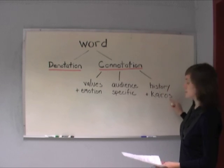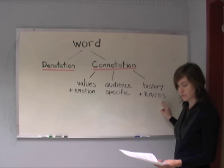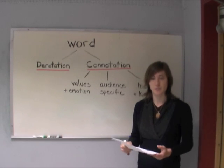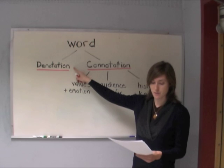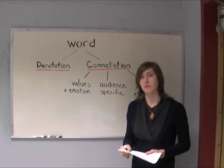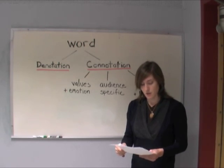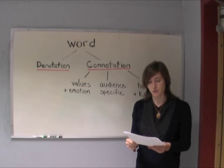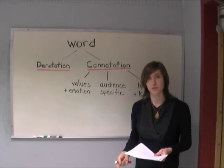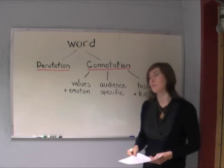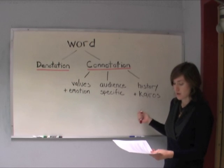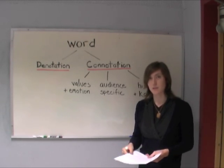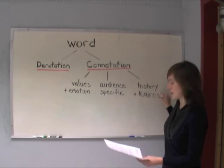The connotation of a word also depends on kairos. To take an example from your more recent work on the political campaigns, think about the word 'economy.' The denotation of economy is the wealth and resources of a country or region. But the connotation of 'economy' in 2012 might include recession, weak, or even crisis. But at other times, depending on the kairos, the connotation of 'economy' could mean growth, strength, or prosperity. So the connotation depends on both history and kairos.